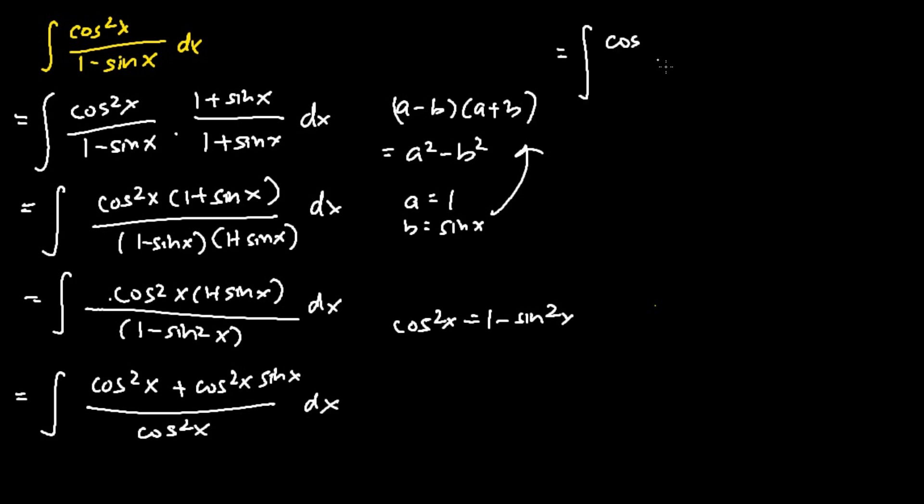And next, what I'll do is split the whole integral into two different integrals. The first integral will be the integral of cosine squared x over cosine squared x dx, and the second integral will be the integral of cosine squared x sine x over cosine squared x dx.